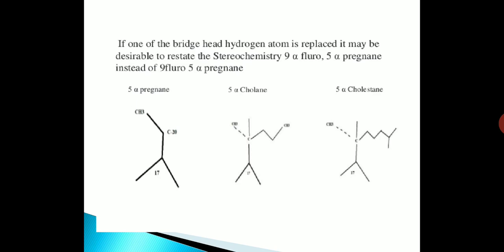If one of the bridgehead hydrogen atoms is replaced, it may be desirable to restate the stereochemistry — for example, 9-alpha-fluoro-5-alpha-pregnene instead of 9-fluoro-5-alpha-pregnene. As I have indicated in this diagram, the first figure is 5-alpha-pregnene, the second is 5-alpha-cholane, and the third is 5-alpha-cholestane.